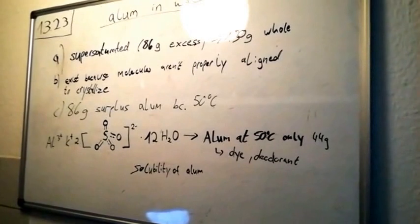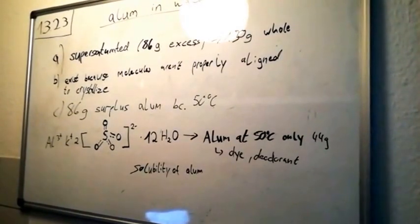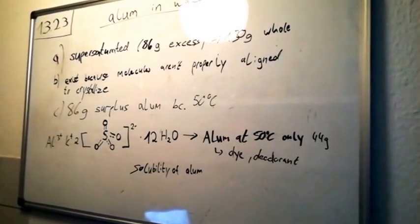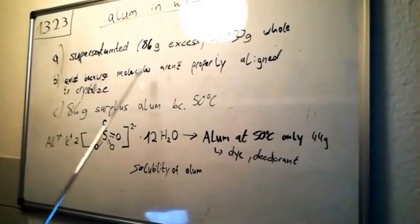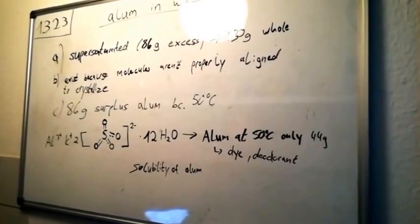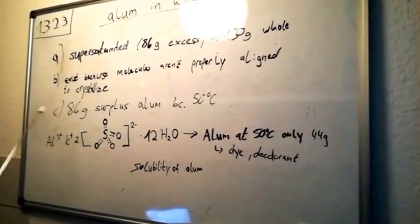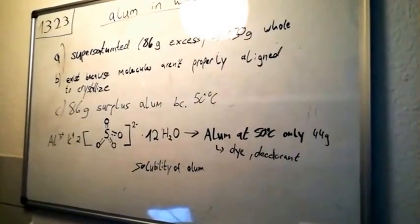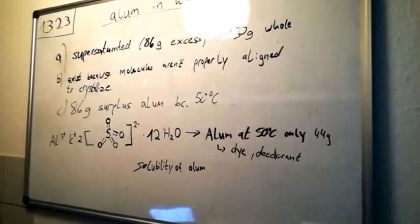The last question is: at what equilibrium, what mass of crystals do you expect to form? As I already said, there's 86 grams of excess alum, so I expect 86 grams of surplus alum to crystallize at 50 degrees.